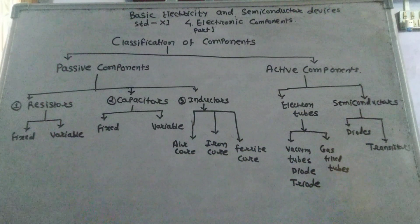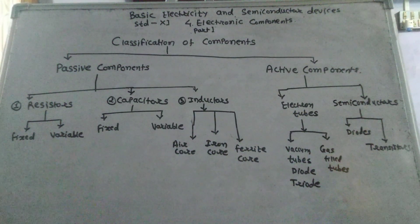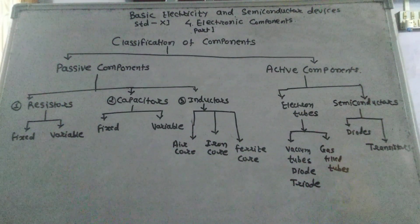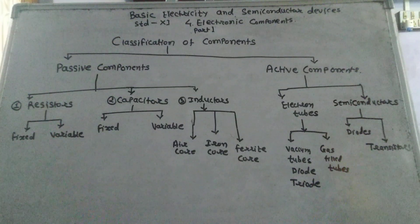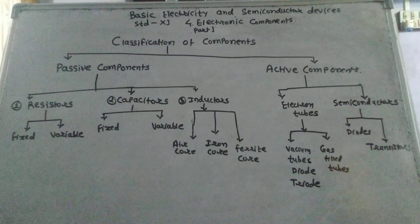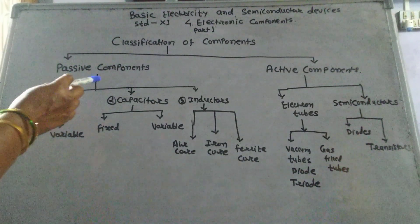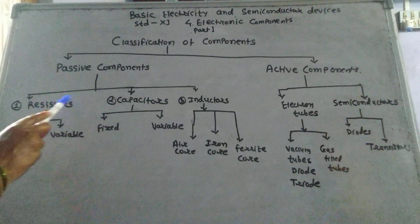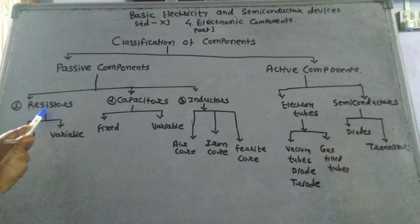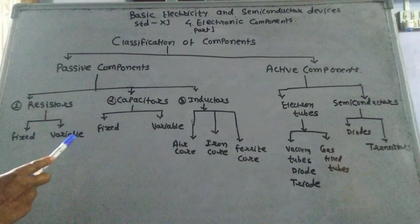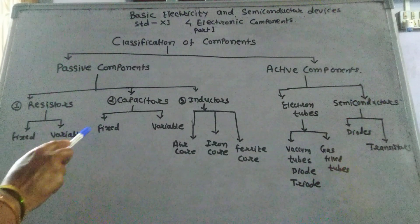Active components — electron tubes and semiconductors — are active components because they have the capacity to amplify, rectify the supply, and act as a switch. Passive components include resistors, capacitors, and inductors.